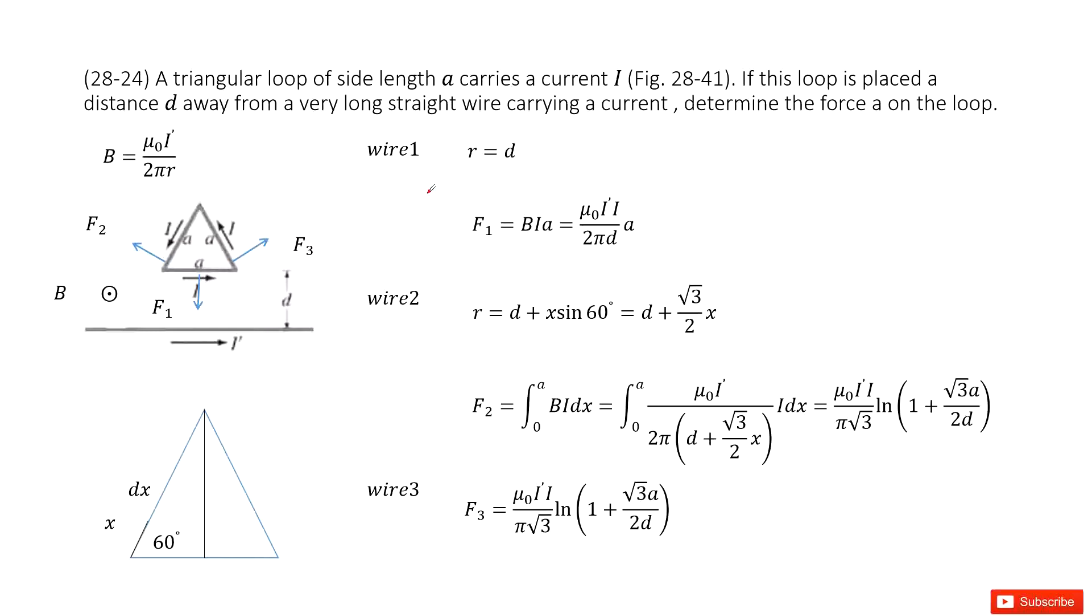Chapter 28 is about sources of magnetic fields. We have a triangular loop of side length A carrying current I, placed a distance D away from a very long straight wire carrying a current. Determine the force on the loop.